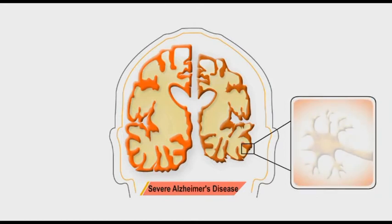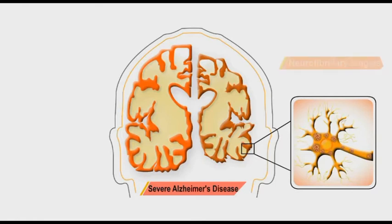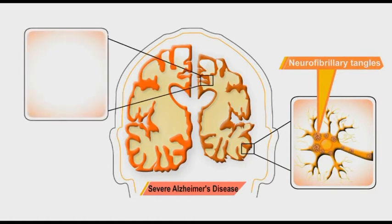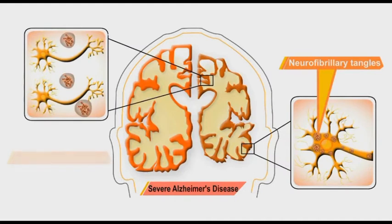There are two important findings in the brain of patients with Alzheimer disease: the neurofibrillary tangles inside the nerve cells and amyloid plaques between nerve cells.